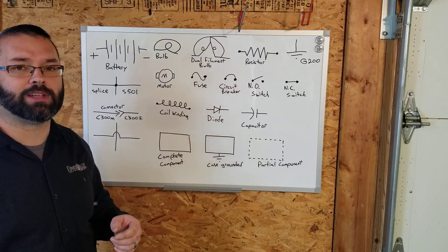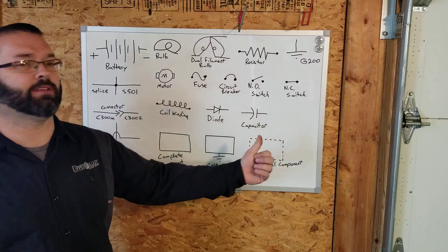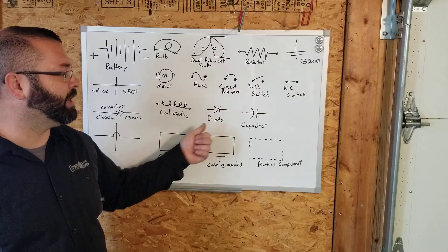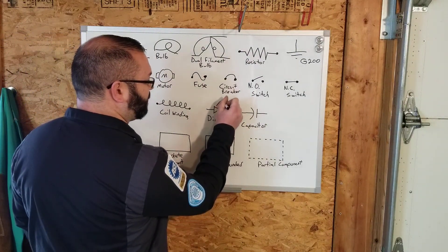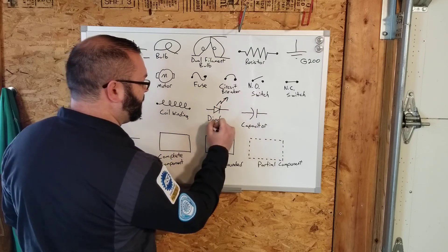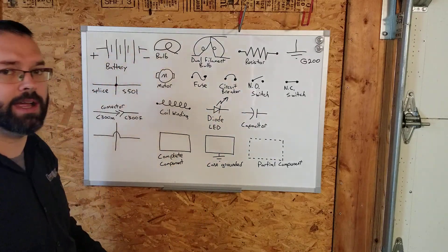Diode. A diode is like a check valve. It allows electricity to flow in the direction of the arrow but will not let it flow backwards. These are diodes. You will see LEDs, and there will be a little lightning bolt coming out. That then is a light emitting diode, an LED.